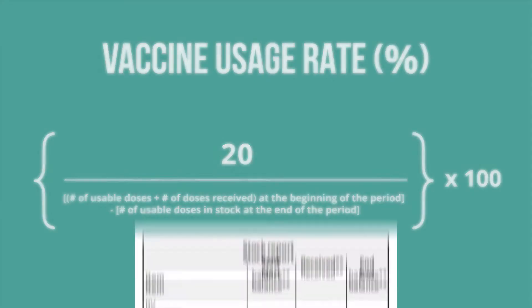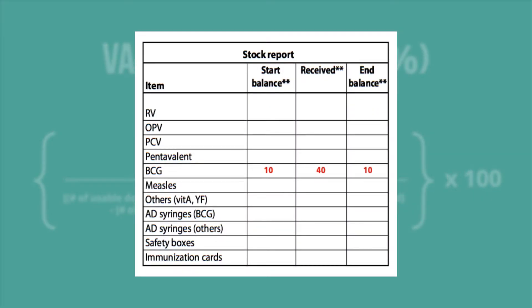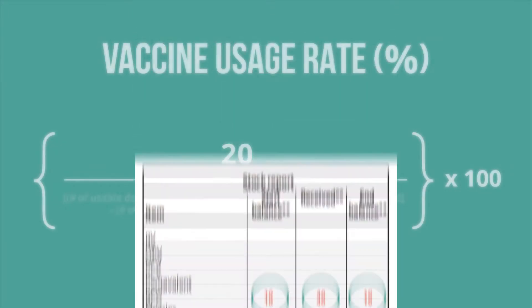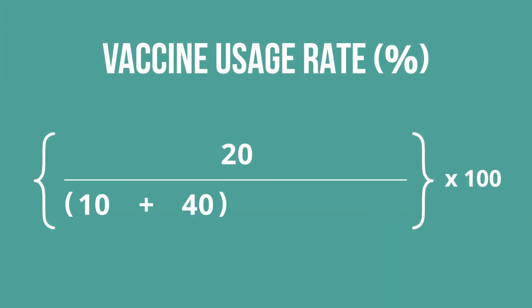For the denominator of the vaccine usage rate, refer to the data in your stock records. Take the number of doses you had in stock at the start of the month — 10, or one vial of BCG — and add the number of doses received during the month, 40. Then subtract the number of doses you have in stock at the end of the month, 10 doses. Your denominator total would be 10 plus 40 minus 10, or 40.